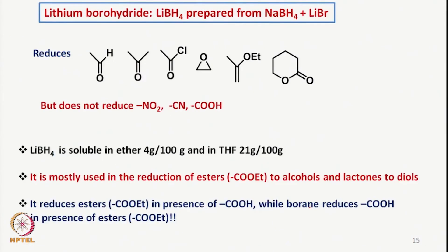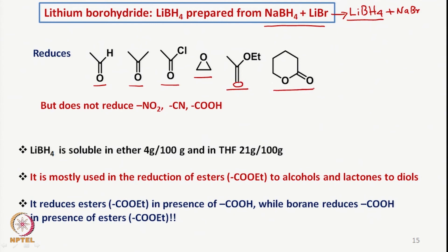We have lithium borohydride (LiBH₄) as a reducing agent, which can be easily prepared from sodium borohydride and lithium bromide. Combining the two, sodium bromide precipitates and lithium borohydride forms, with NaBr as a byproduct, giving LiBH₄ very readily. Because of the harder nature of Li⁺ compared to Na⁺, the reduction occurs not only of aldehydes and ketones but also acid chlorides, epoxides, esters, and lactones.